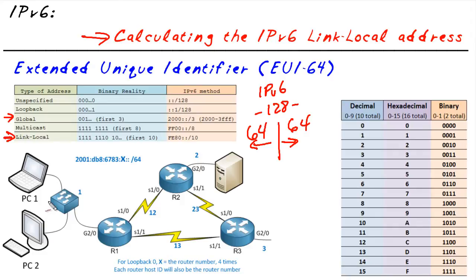To create that link local address, here's what it does. For the network portion — the first 64 bits — it's going to use FE80 and a whole bunch of zeros until it reaches a 64-bit boundary. And that's the network portion.